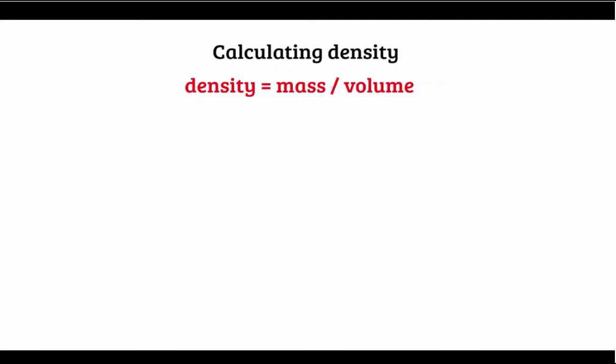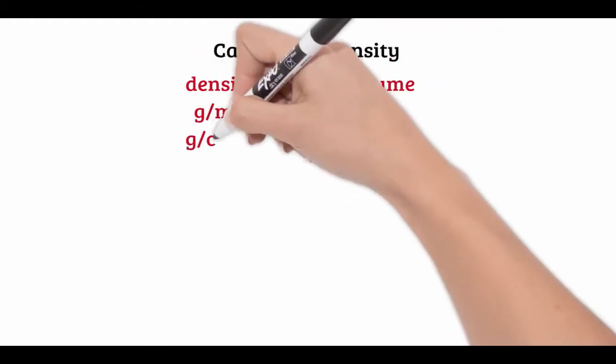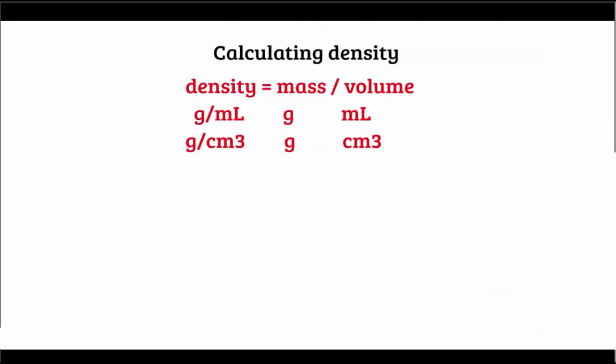Now the units are really important for density. Depending on the units you use for mass and volume, that will give you the units for density. If we use grams for mass and milliliters for volume, then the units for density will be grams per milliliter.